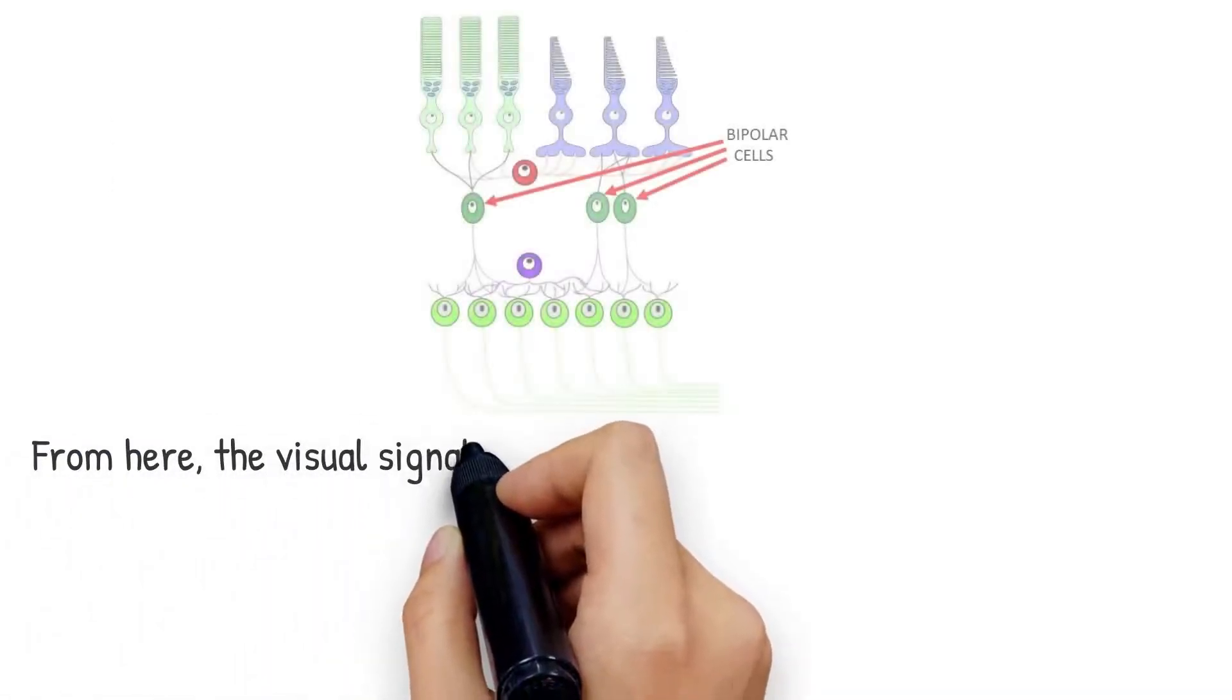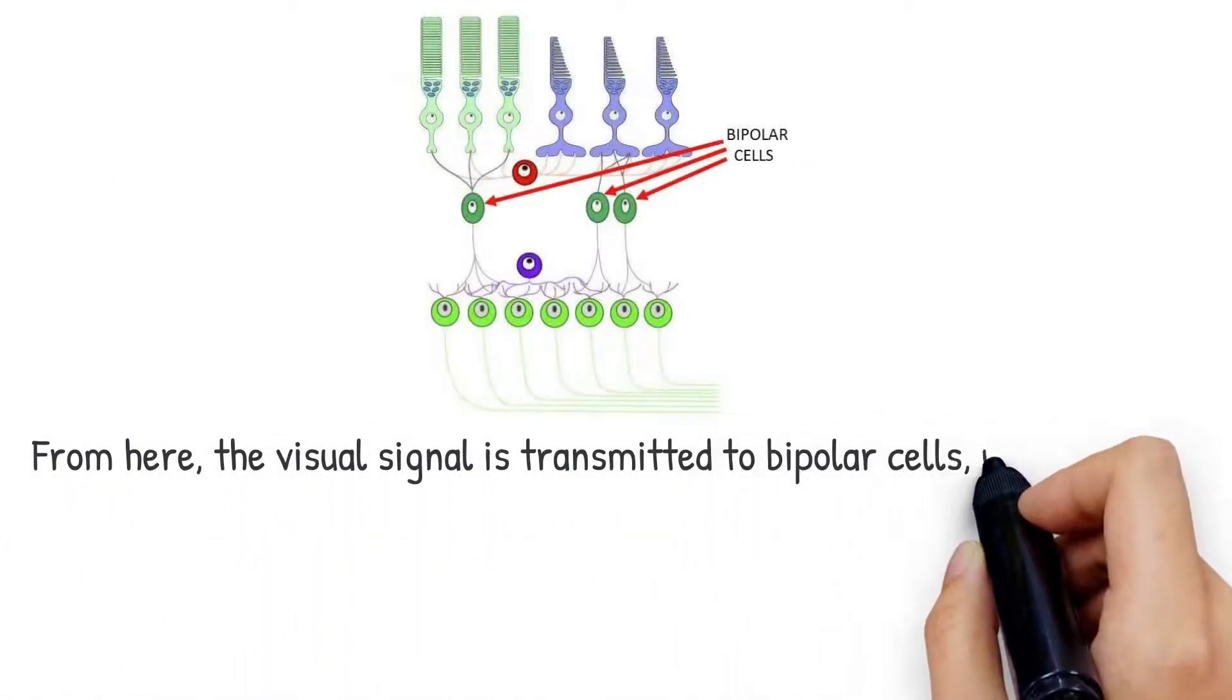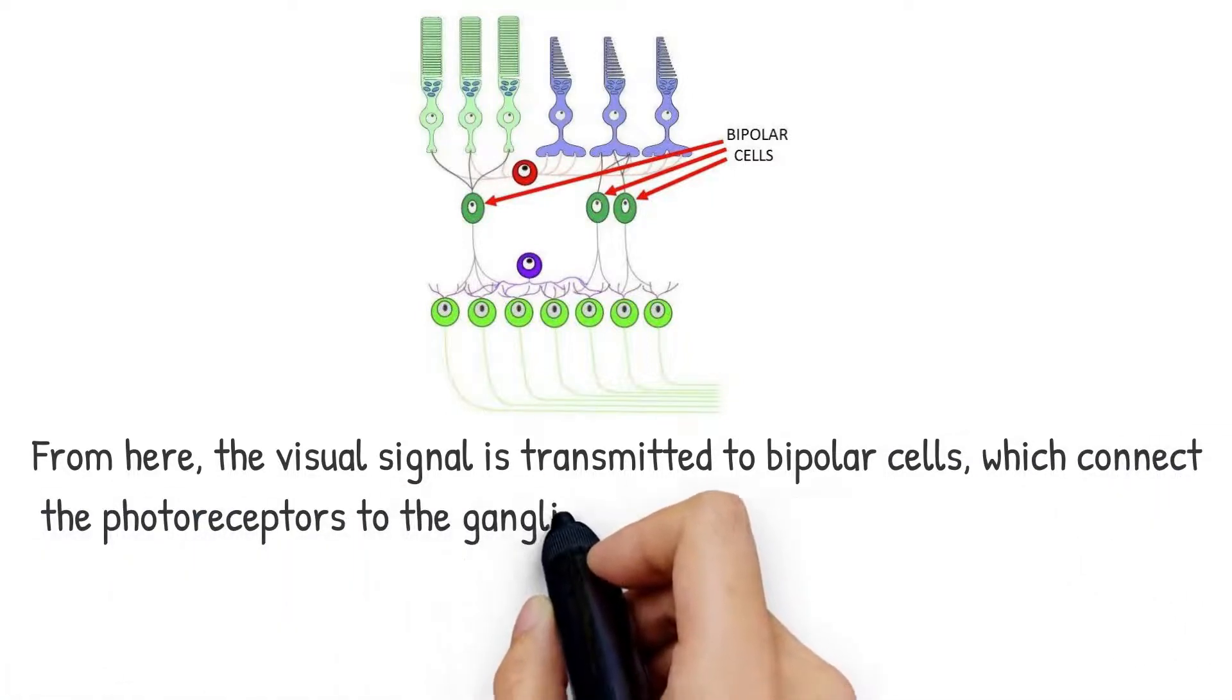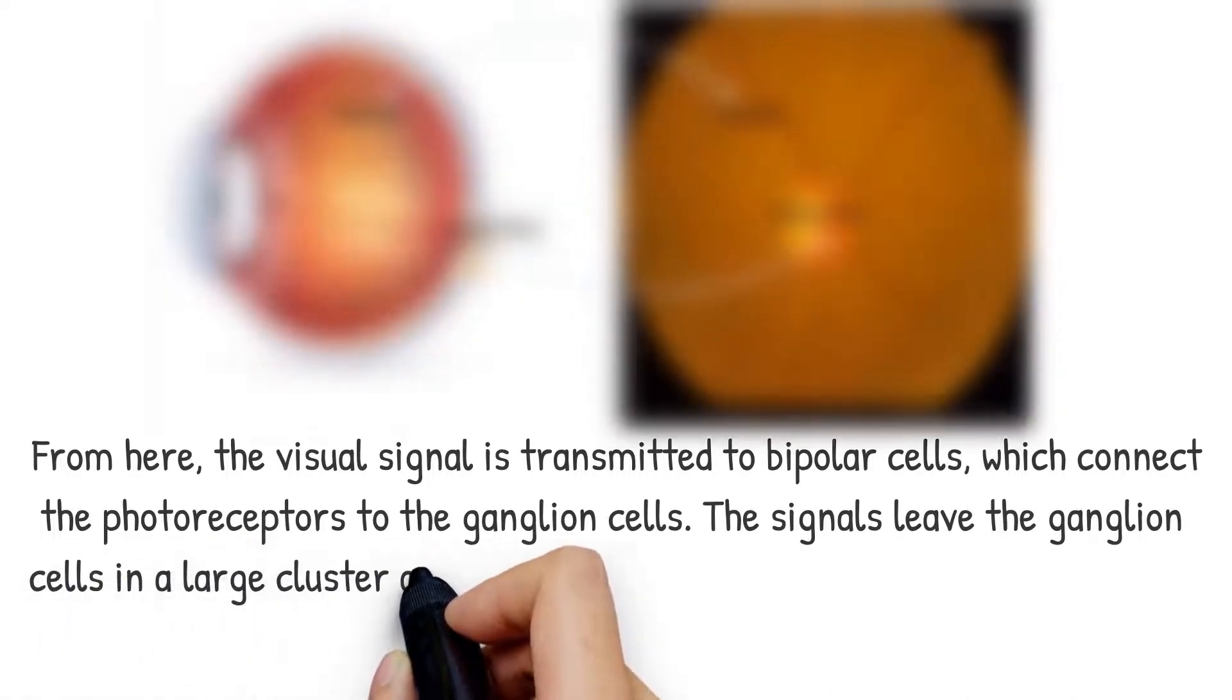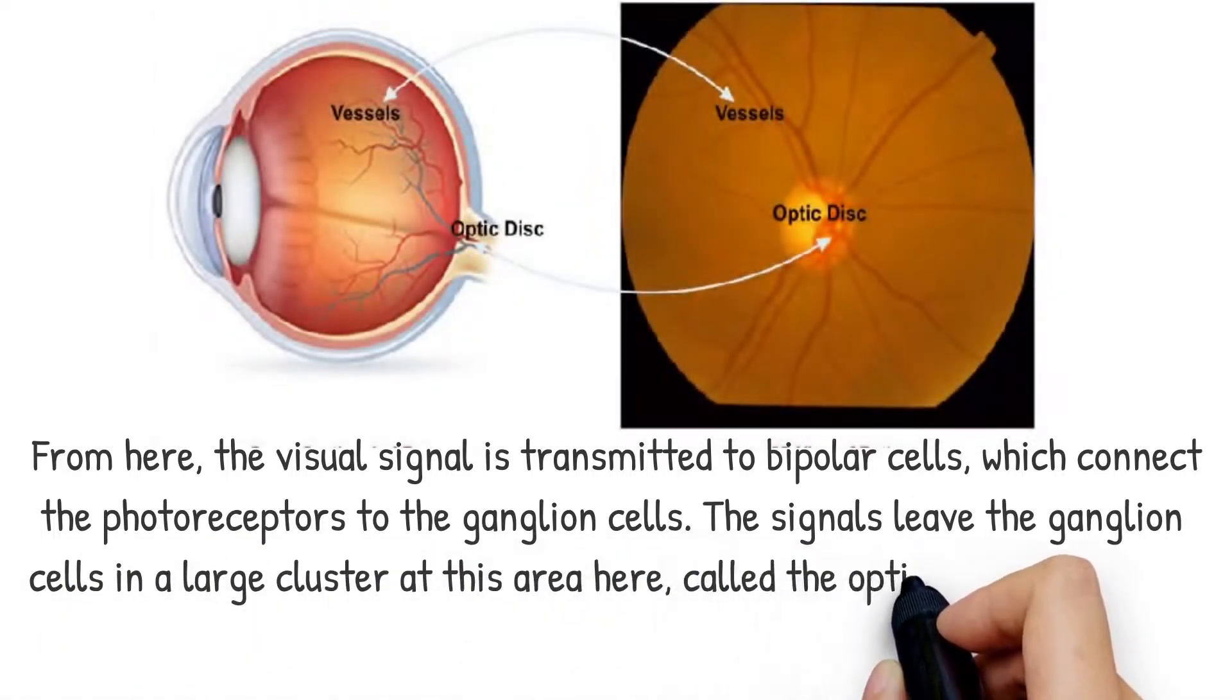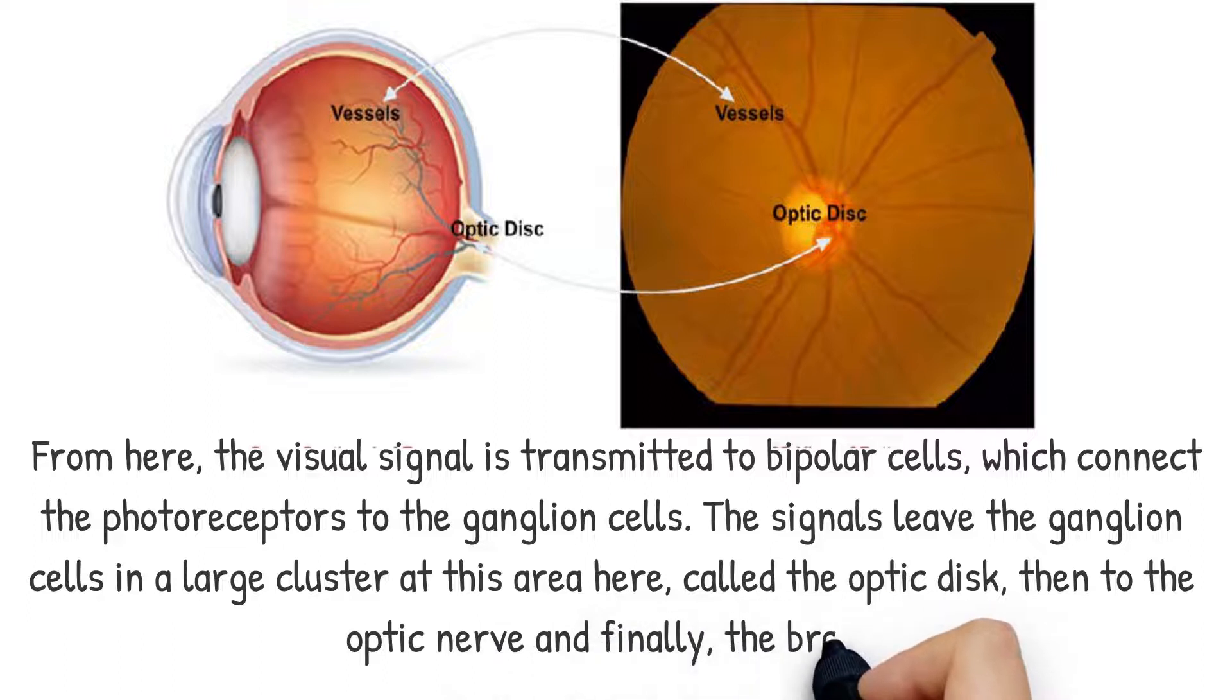From here, the visual signal is transmitted to bipolar cells, which connect the photoreceptors to the ganglion cells. The signal leaves the ganglion cells in a large cluster at this area here called the optic disc, and then to the optic nerve, and finally, the brain.